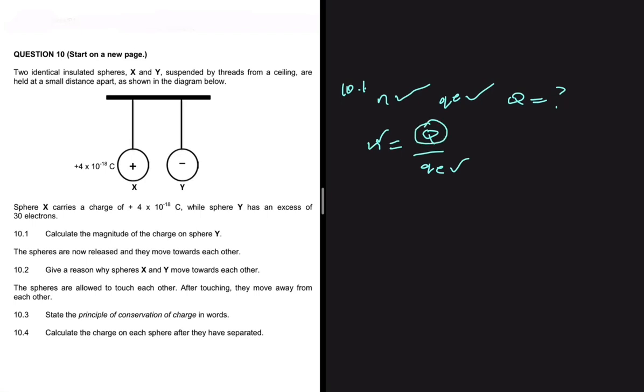What is the number of electrons? We're told that we have 30 electrons in excess. Then Q, which is what we're looking for, divided by the charge of an electron, which is minus 1.6 times 10 to the minus 19.